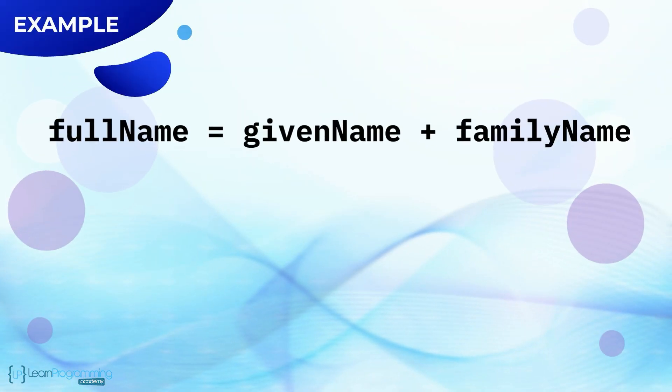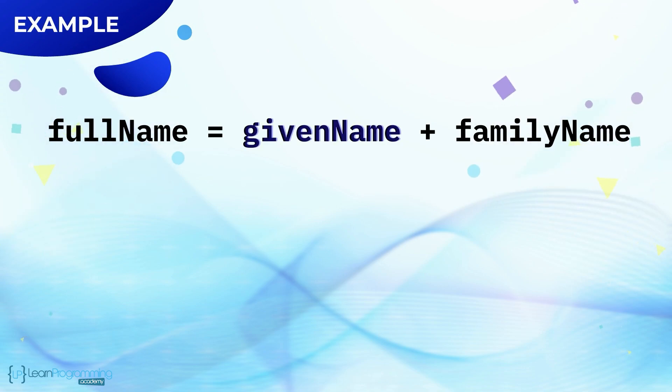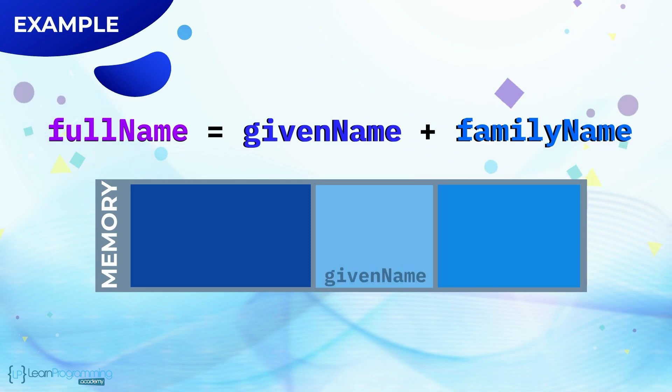So let's say I have three symbolic memory location names called given name, family name, and full name. The data value stored in the given name memory location is Tim. The data value stored in the family name is Buchalka.